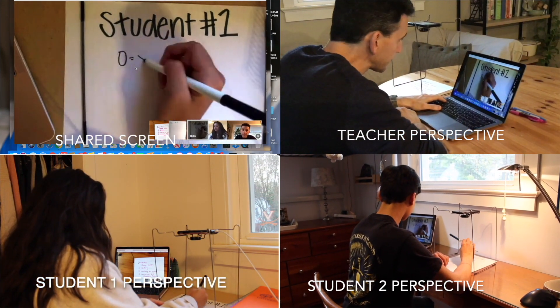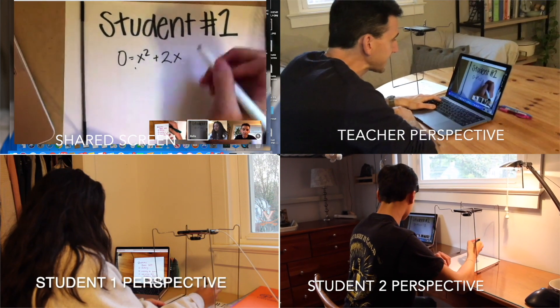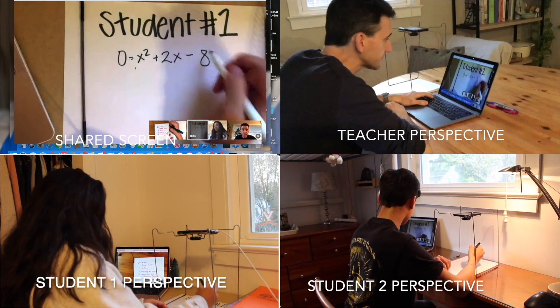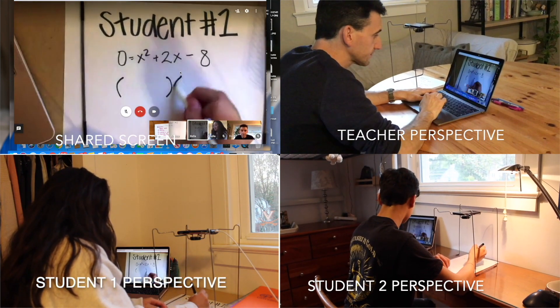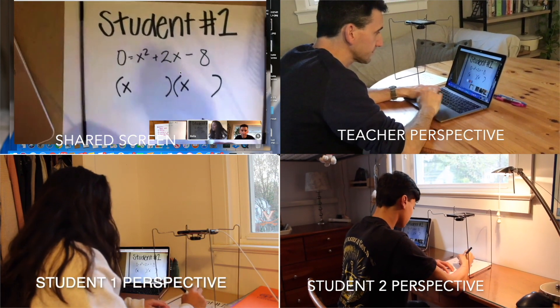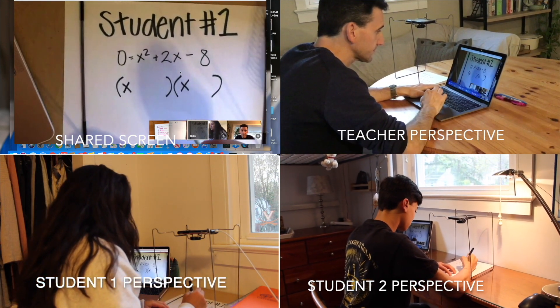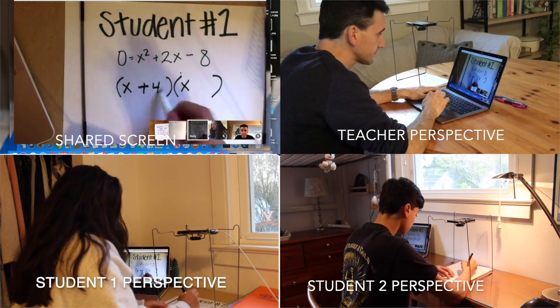I'm going to start with my two sets of parentheses with the x's in the beginning. I know that positive 4 and negative 2 multiplies to negative 8 and adds to positive 2, so that's what I'll fill in.